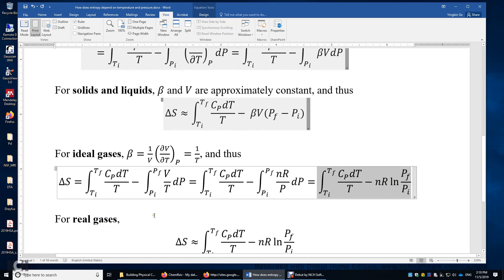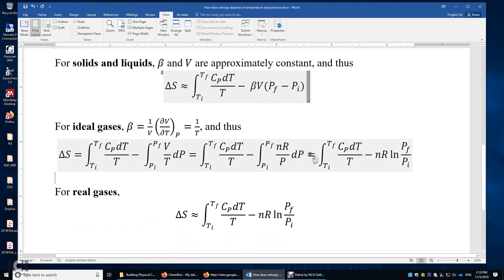How about real gases? We simply change this equal sign to approximately equal sign. And then this can be used to estimate the entropy change of a real gas. Stay tuned for eventual signs.